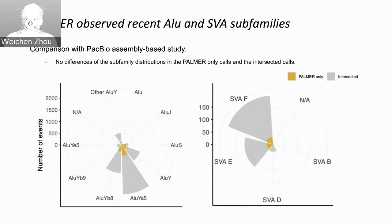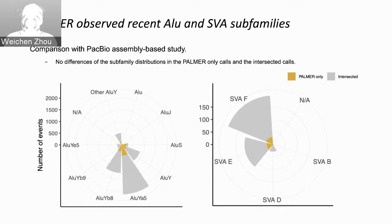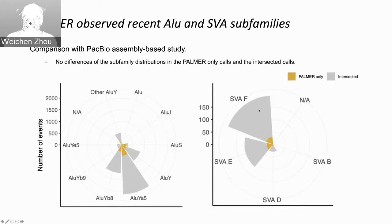As mentioned, we have consensus sequences for each individual. We looked into the subfamily or subclass of ALUs and SVAs, classified by the identity or extent of sequence diversity and certain nucleotide substitutions relative to the reference mobile element insertion sequences. Most of our calls are recent subfamilies: ALUJA5 and ALUJA8. For SVA, it is SVAF and SVAE.